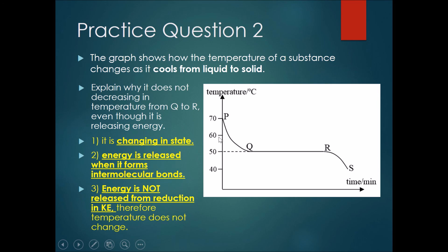Second, you must say where the energy is being released from. Previously at p to q, energy was being released from its kinetic energy; however, from q to r, energy is released from its potential energy as intermolecular bonds are formed. Third, explain where energy is not being released from: it is not being released from a reduction in KE. Because temperature and KE are related, the temperature does not change.